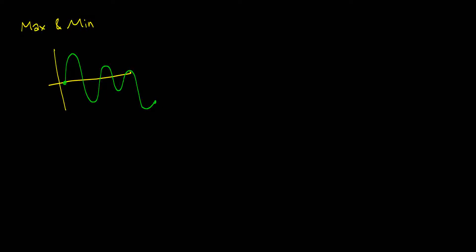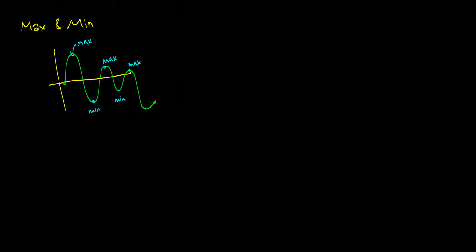We're going to talk about absolute maximums, absolute minimums, local maximums, and local minimums. You should know that on this graph right here, this point is a maximum. And every single time that it changes directions, we have another maximum and another minimum. So we have a bunch of maximums and minimums.